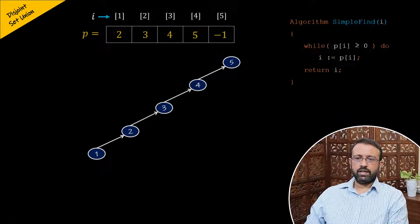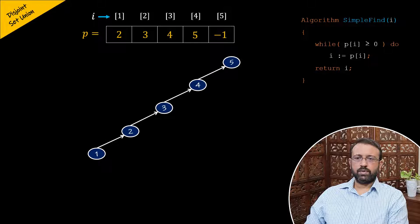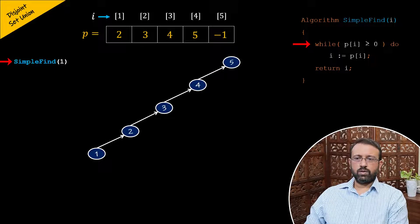Let us consider the case where we have five elements in the disjoint set, represented as a tree, with the nodes of the tree stored in array p. Let us perform the sequence of find operations using the simple find algorithm. The algorithm has a while loop with the condition p of i greater than or equal to zero, which loops until the value of p of i becomes negative one, or until the root is found.